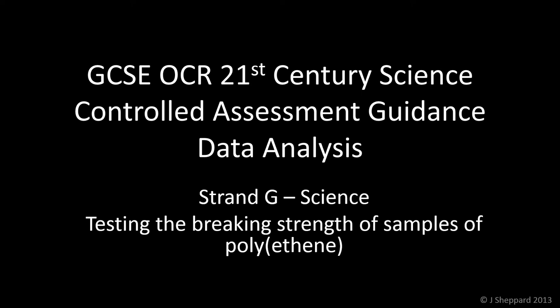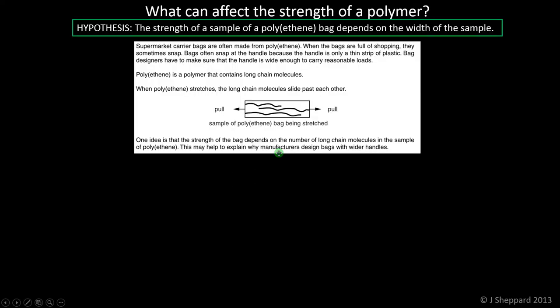This is a discussion of the scientific explanations for strand G, the testing the breaking strength of samples of polythene data analysis task. It's important to bear in mind here what a hypothesis is, and that's that the strength of a sample of polythene bag depends on the width of the sample.